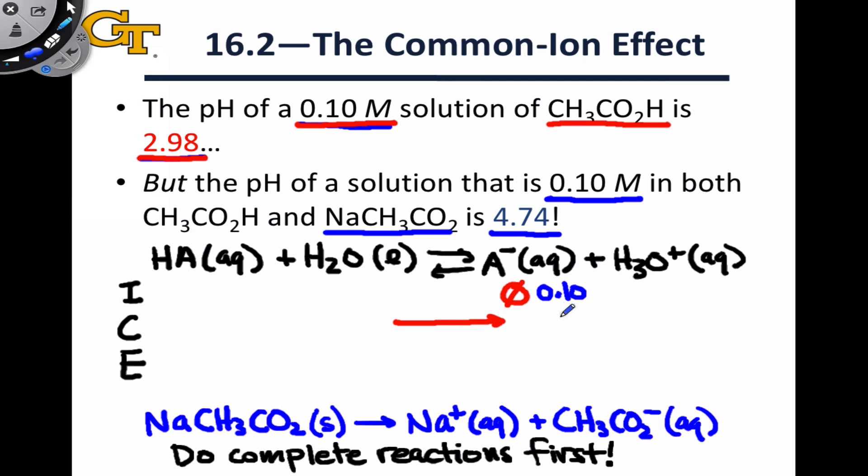In a Le Chatelier's principle sense, we've added a product, and so the reaction will not go forward as much as it would in the absence of that product. This explains why the concentration of hydronium in the pure acid case is larger than the concentration of hydronium in the case when we have some acetate dissolved.